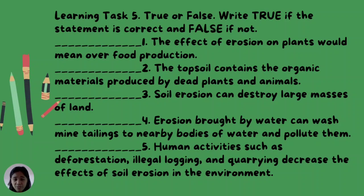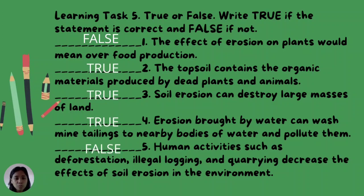For Learning Task Number 5, True or False. Write true if the statement is correct and false if not. Number 1: The effect of erosion on plants would mean over food production — False. Number 2: The topsoil contains organic materials produced by dead plants and animals — True. Number 3: Soil erosion can destroy large masses of land — True. Number 4: Erosion brought by water can wash mine tailings into nearby bodies of water and pollute them — True. Number 5: Human activities such as deforestation, illegal logging, and quarrying decrease the effects of soil erosion in the environment — False.